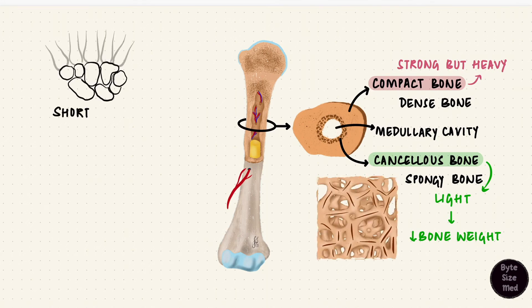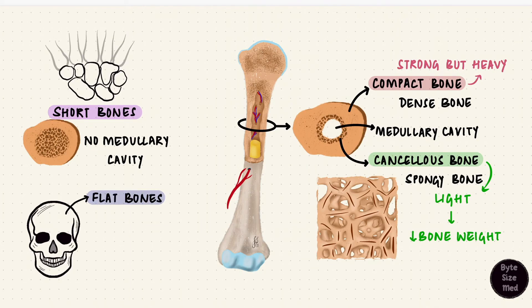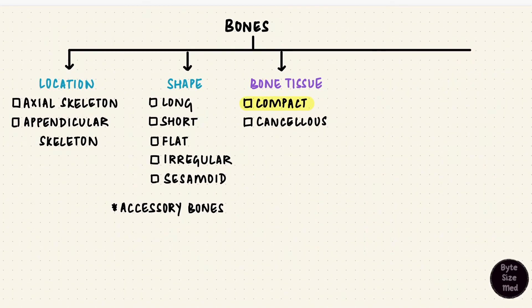Short bones just have cancellous bone cores surrounded by compact bone — there's no central medullary cavity. Flat bones like the skull bones that form the calvaria have two layers of compact bone forming plates separated by a thicker layer of cancellous bone called the diploë. So all the bones in the body have compact and cancellous bone — that's macroscopically.